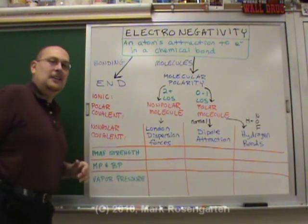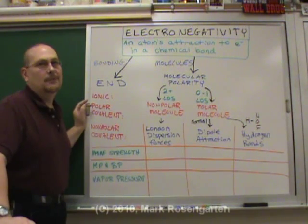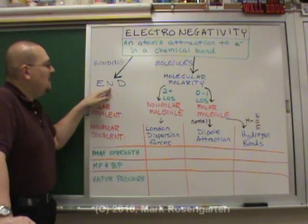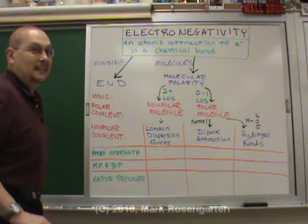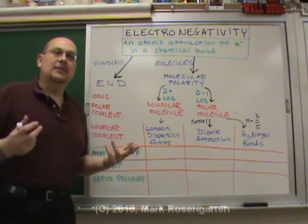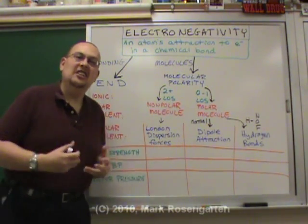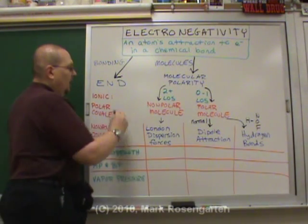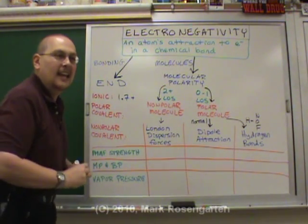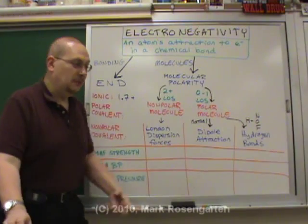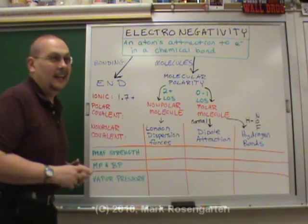So in chemical bonding, you can tell what kind of bond you have just by looking at the difference in the electronegativities of the two elements in question - the electronegativity difference. For a bond to be ionic, you've got to have a pretty big difference between the two electronegativities. On average, an electronegativity difference of 1.7 or more is considered ionic. The bigger the difference, the more ionic character it has.